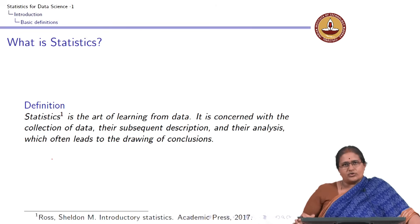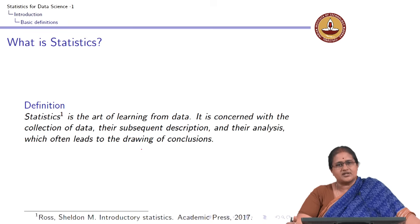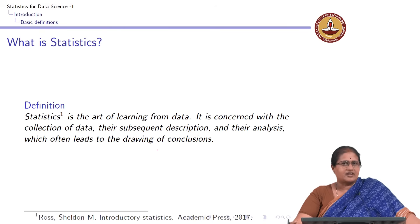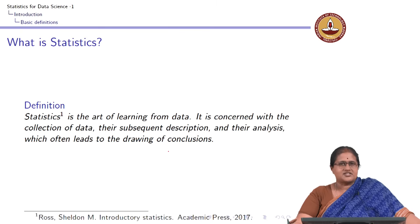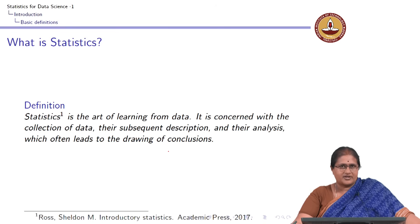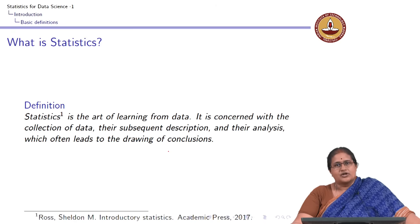What is statistics? If you look at the definitions of statistics over the years, you can see there has been a transformation over time. What started as just summarizing data gradually improved to inference from data, and now, with a lot of data available, statistics is being redefined as the art of learning from data. Sheldon Ross defines statistics as the art of learning from data — concerned with collection of data, subsequent description and analysis, which often leads to drawing of conclusions.